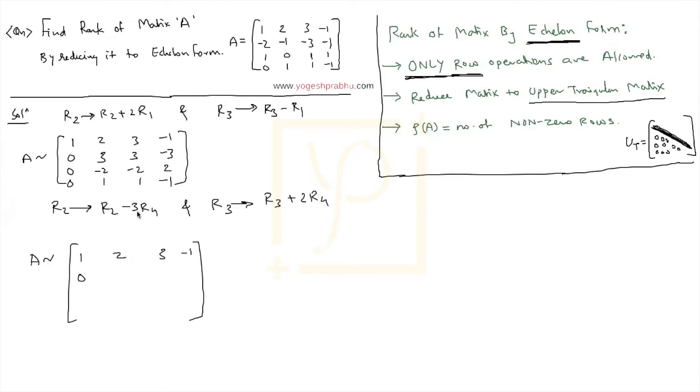And if I do R2 minus 3 times R4, if I do 3 times and subtract, can you see? All these values become 0. And same goes for R3 as well. If I do R3 plus 2R4, all these values will also become 0. So I got all these 0.